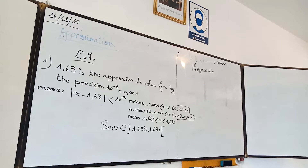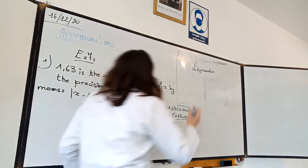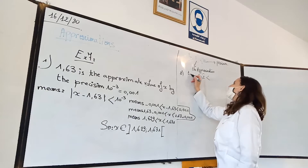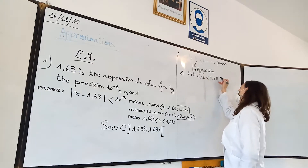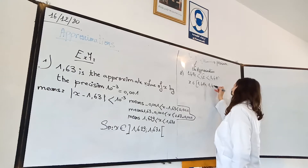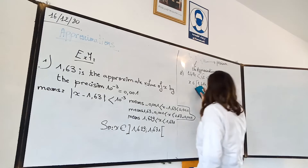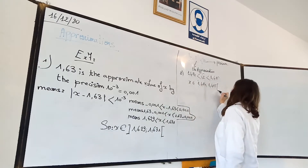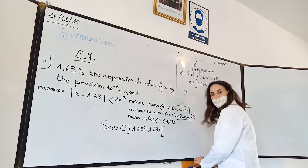Determine the interval of x, knowing that x is the square root of 2, and 1.414 and 1.415 are given. So what is the interval of x in this case? Square root 2 is between 1.414 and 1.415, so it belongs to the interval [1.414, 1.415]. Very easy.